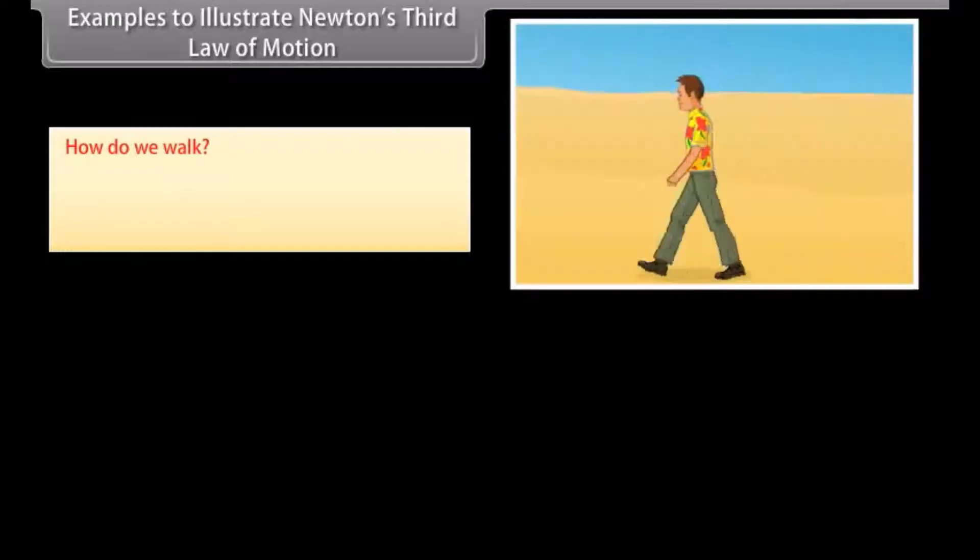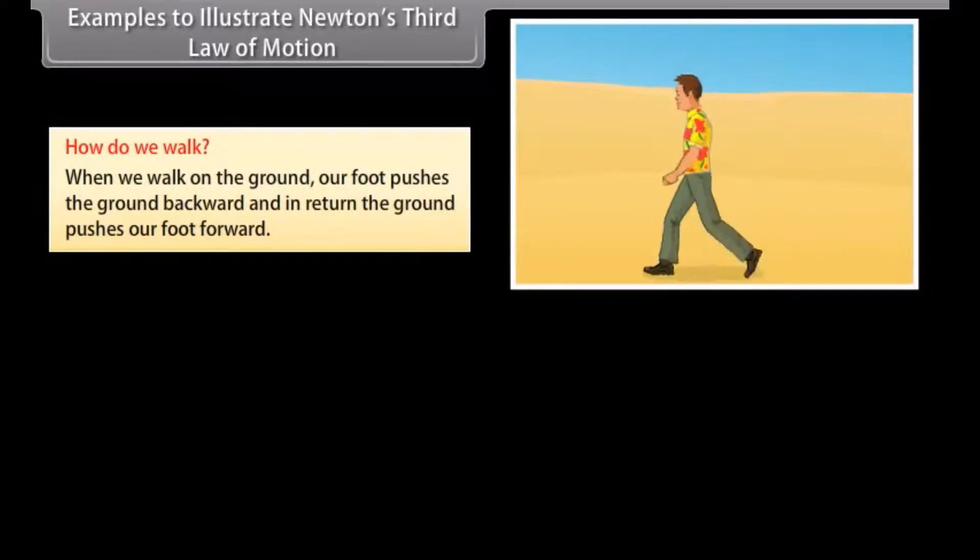How do we walk? When we walk on the ground, our foot pushes the ground backward and in return, the ground pushes our foot forward.